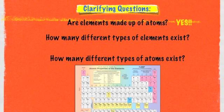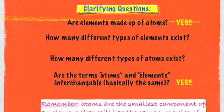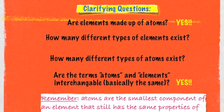For example, you have the element hydrogen and helium in that first row — those are also different types of atoms. So the question is: are the terms atoms and elements interchangeable? Do they mean basically the same thing? The answer is yes. But you have to remember that atoms are actually the smallest component of that element.